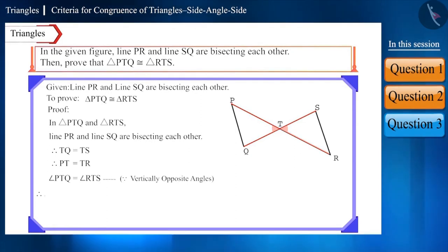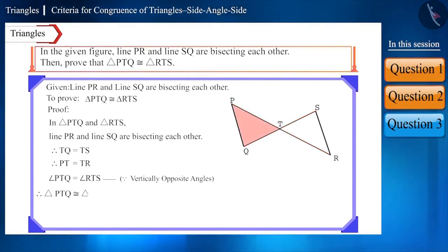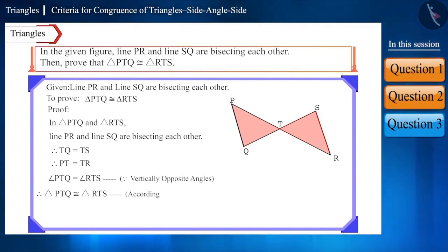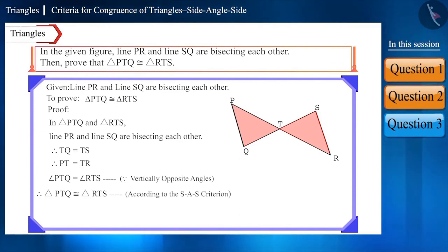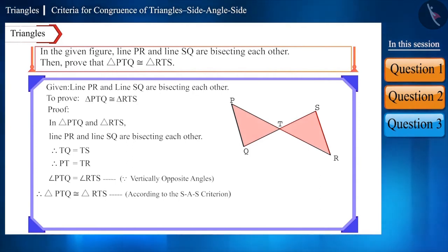Therefore, according to the SAS criterion, triangle PTQ is congruent to triangle RTS. Friends, you can see here that the names of the two triangles are in the same order as the congruence of their sides and angles.